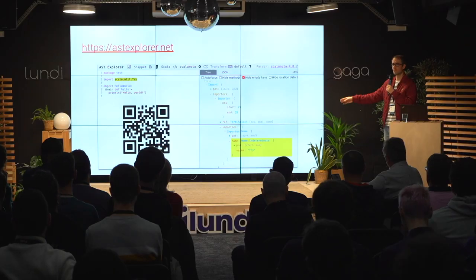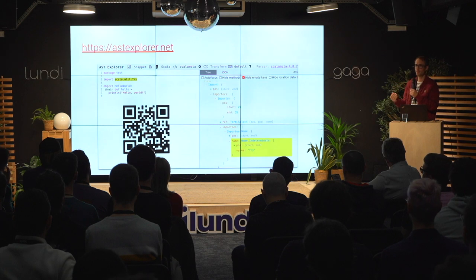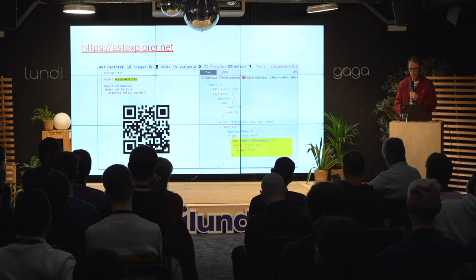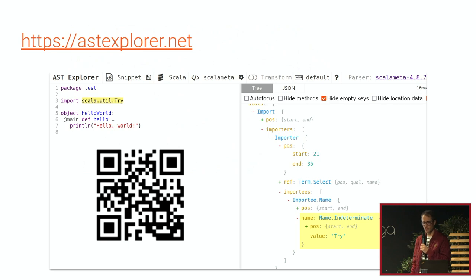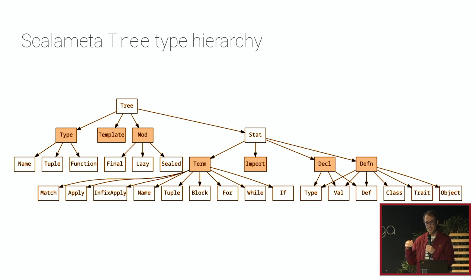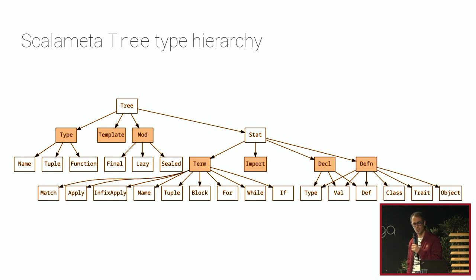It's very useful when you don't know anything about trees, as it can be a bit overwhelming. I'd recommend pasting your own code to get a feeling for what the ScalaMeta syntax tree is. There's also a tree hierarchy: for example, you have declarations and definitions, and a `val` could be either a definition or a declaration. These are ScalaMeta trees.